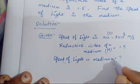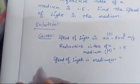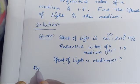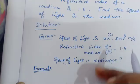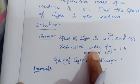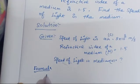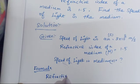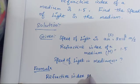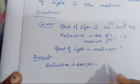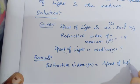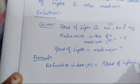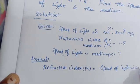The next step is the formula. We know the relation between the refractive index and speed of light. The formula is: refractive index, denoted by the letter mu (μ), is equal to the speed of light in air, denoted by the letter C.